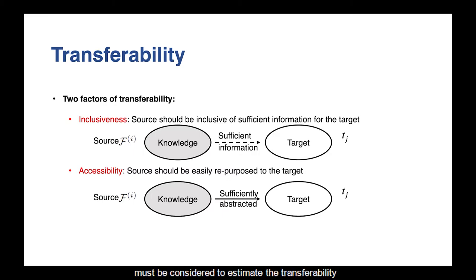We argue two factors must be considered to estimate the transferability. The first one is inclusiveness. For a transfer to be successful, the feature space from the source task should be inclusive of sufficient information for solving the target task. The second one is accessibility. The feature space from the source task should be sufficiently abstracted and easily repurposed to the target task, so that the target task can be well solved with limited human supervision.